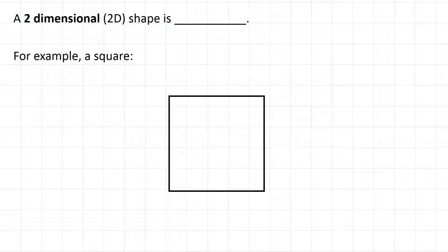A two-dimensional shape is flat. An example of that would be a square. A square is flat on your page.